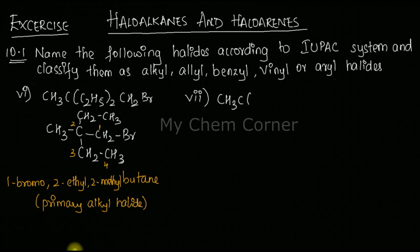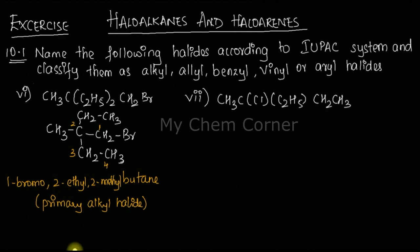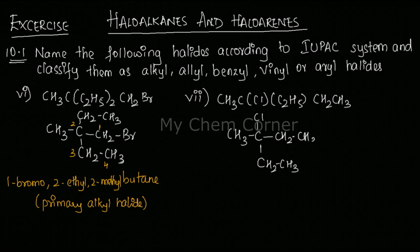Moving to question seven: the compound is CH₃C(Cl)(C₂H₅)CH₂CH₃. Drawing the molecule, we have CH₃-C with a Cl and two ethyl groups — one CH₂CH₃ in the bracket and another CH₂CH₃ continuing the chain.